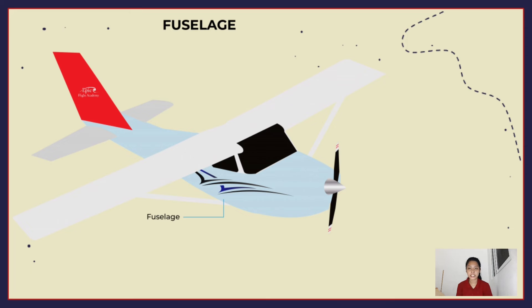The fuselage is the central body of an airplane, and designed to accommodate the crew, passengers, and cargo. It also provides the structural connection for the wings and tail assembly.